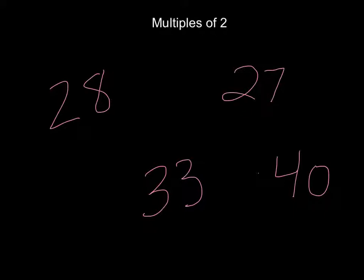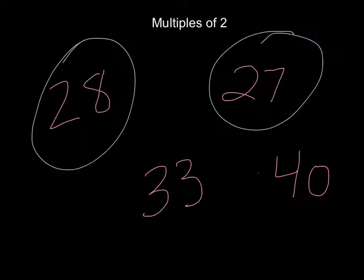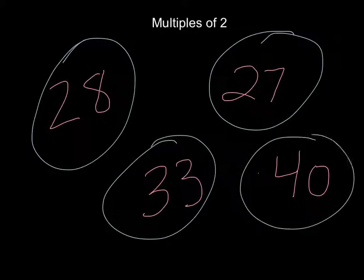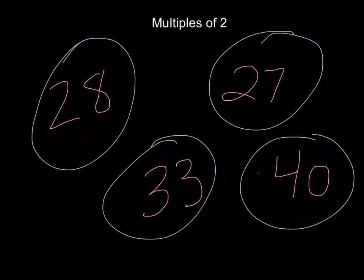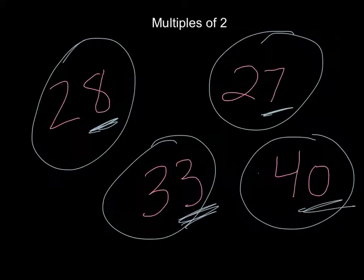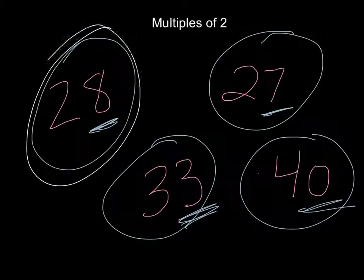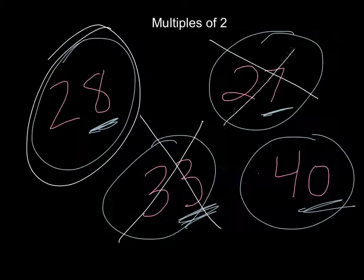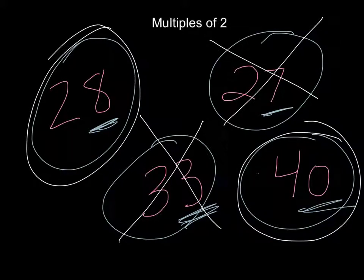Let's say I have multiples of 2. I have the numbers 28, 27, 33, and 40. A number is a multiple of 2 if the number in the ones place is even. That means 28 is a multiple of 2, 33 is not, 27 is not, and 40 is a multiple of 2.